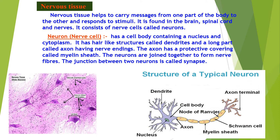The next type of tissue we are going to study is nervous tissue. Nervous tissue helps in carrying messages from one part of the body to the other and responds to stimuli. It is found in the brain, spinal cord, and the nerves. It consists of nerve cells called neurons. A neuron has a cell body which contains a nucleus and cytoplasm. It has hair-like structures called dendrites and a long part called the axon having nerve endings. The axon has a protective covering called the myelin sheath. The neurons are joined together to form nerve fibers. The junction between two neurons is called the synapse. It is through the neurons that messages are transmitted from the brain to different parts of the body and back.